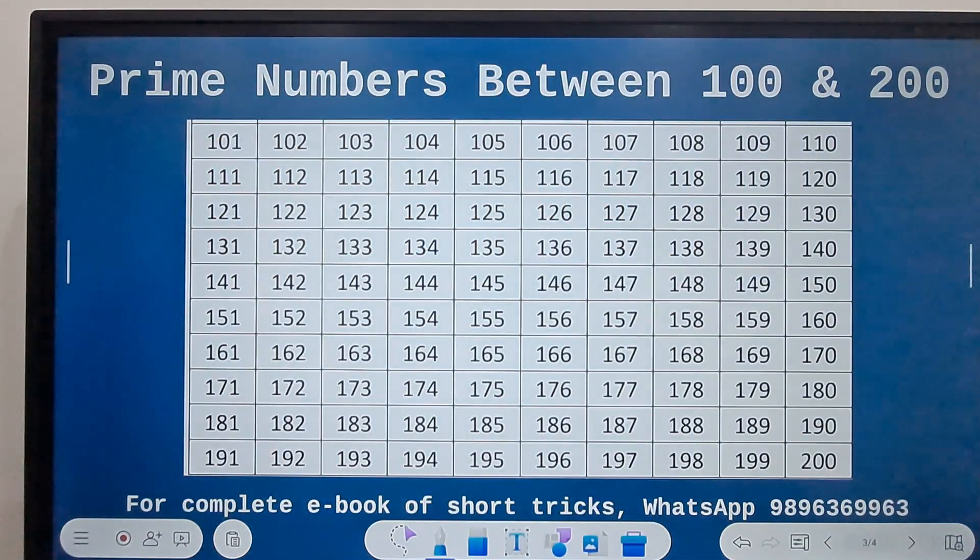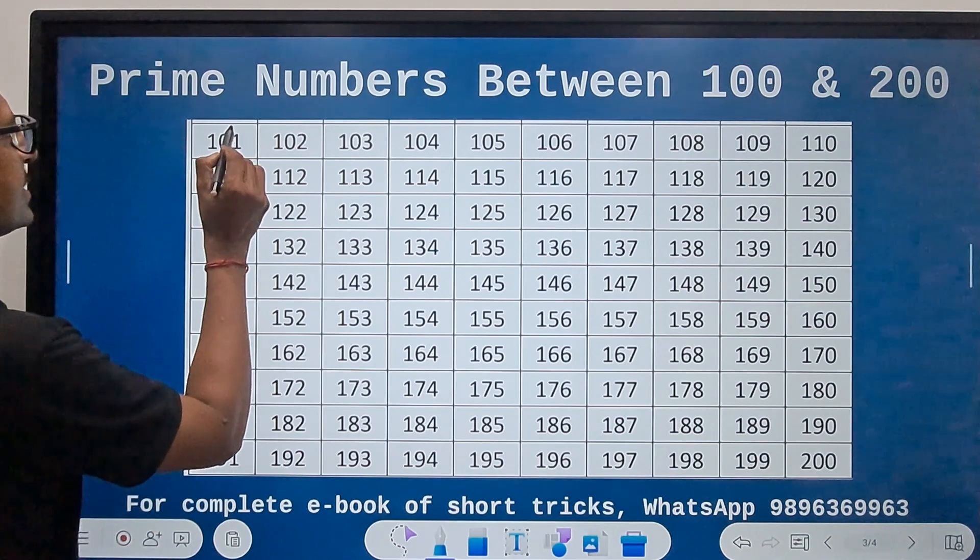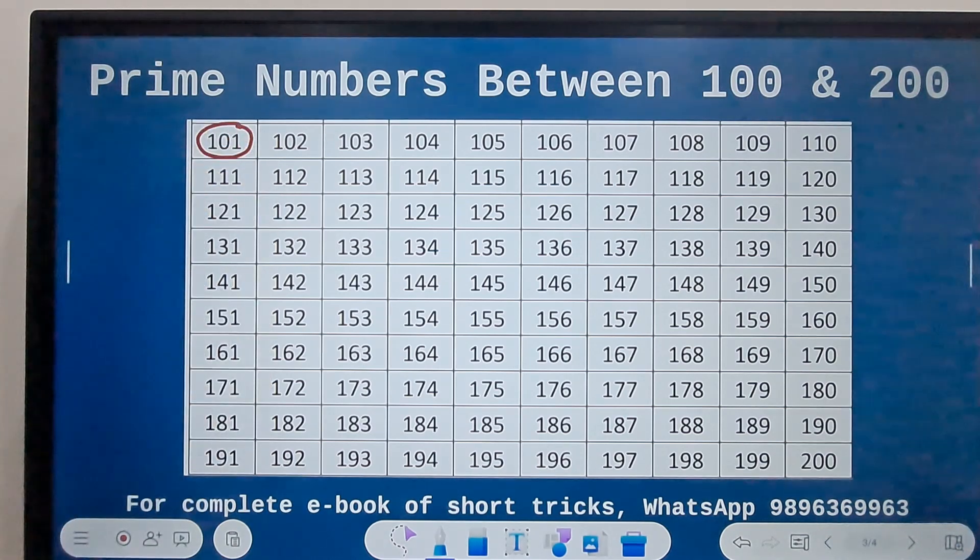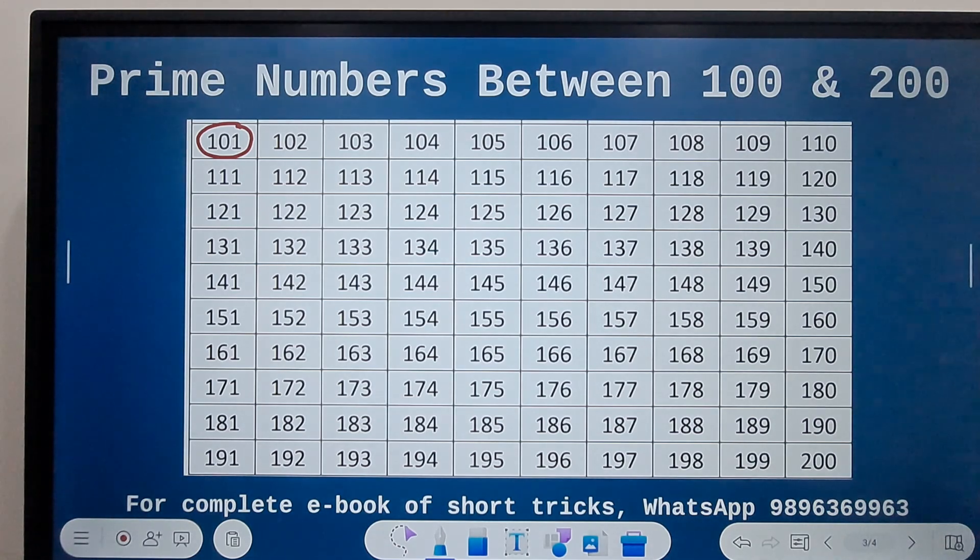Now the first number, 101, this is a prime number. So you need to remember that 101 is a prime number.